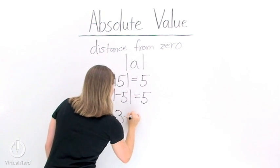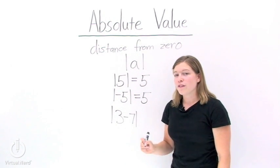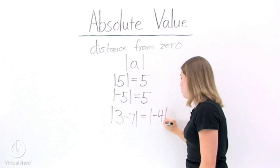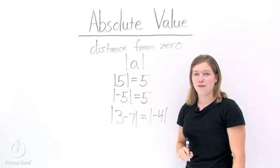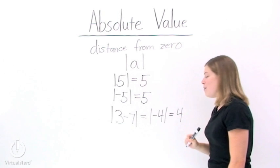One more. What if we have 3 minus 7 inside our absolute values? Well, for something like this, you first want to do the operation that's inside the absolute value sign to get negative 4. Now take your absolute value. Negative 4 becomes 4.